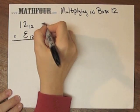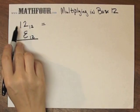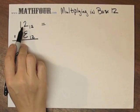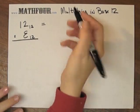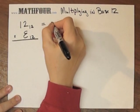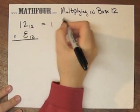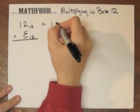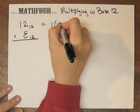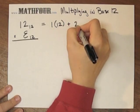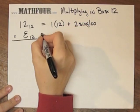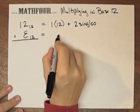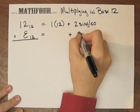12 base 12 is - remember, you can't pronounce this as 12, this is 1, 2, because these things mean different things. It doesn't mean a set of 10 and 2 singles, it means a set of 12 and 2 singles. So this is 1 set of 12 plus 2 singles, and this is 0 sets of 12 plus 11 singles.